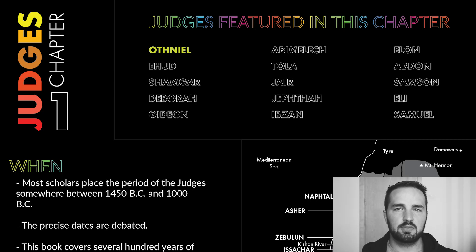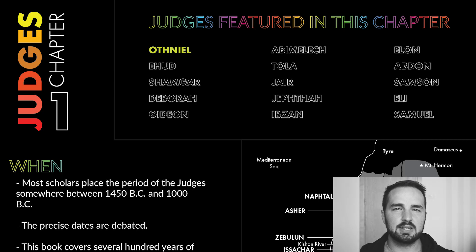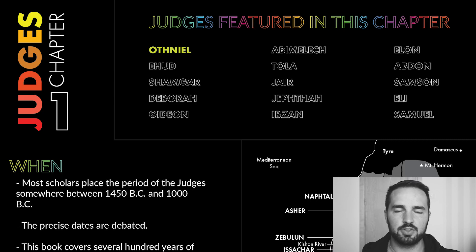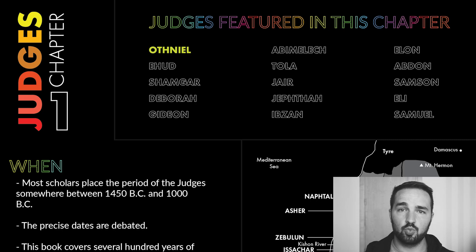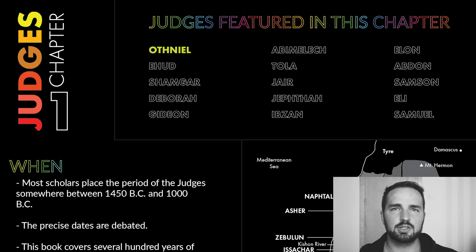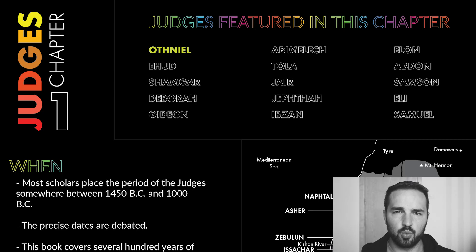The book of Judges centers around 15 characters known as the Judges, who all have some kind of different impact on the nation of Israel. God uses these people — some of them better than others, some more godly than others — to work out his will and guide the nation of Israel and the nations around them in accordance to his will.